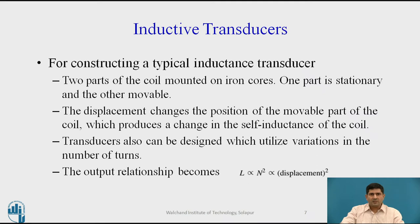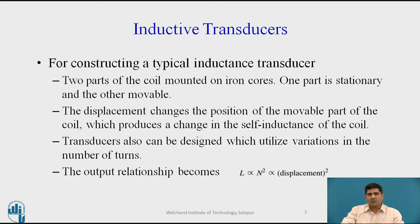When constructing inductive transducers, they typically consist of two parts mounted on iron cores — one part being stationary and the other movable. The displacement changes the position of the moving part of the coil, which produces a change in the self-inductance of the coil. Transducers can be designed which utilize variation in the number of turns as well. The output relation then can be written as L proportional to N², which is in turn proportional to displacement squared. So inductance is proportional to the square of the displacement being measured.